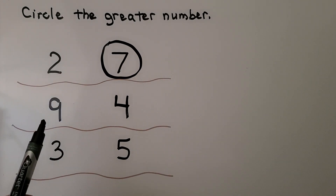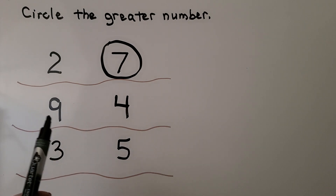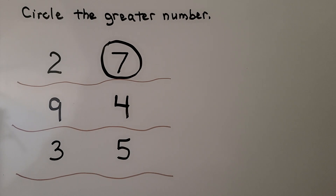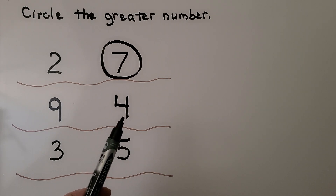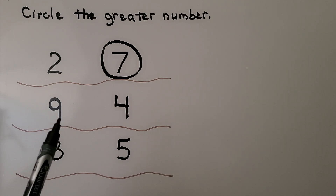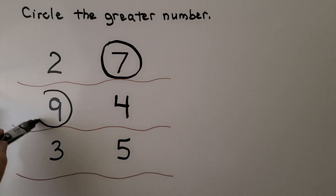For the pair nine and four, we can compare them and use counting order to find the greater number. We count: one, two, three, four, five, six, seven, eight, nine. Nine came after, so nine is the greater number.